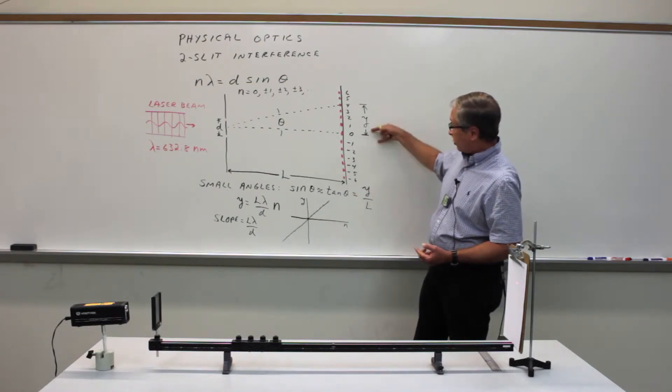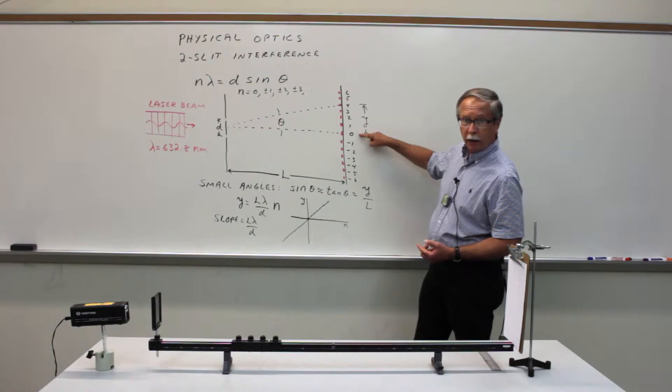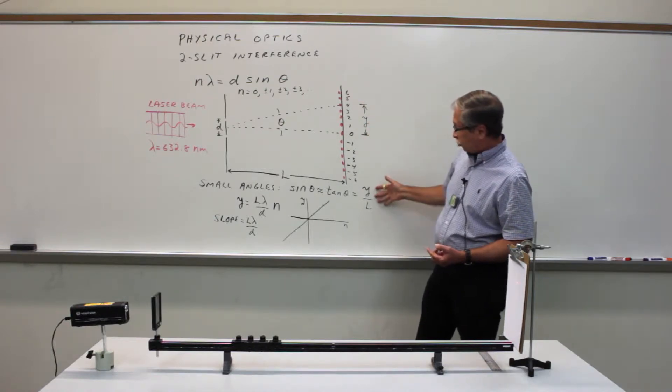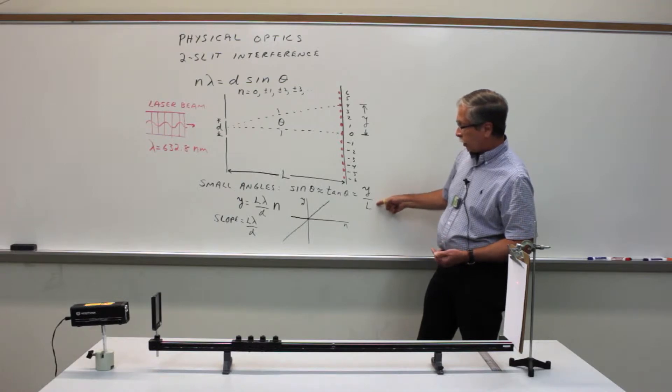and the distance Y from the center of the interference pattern to the location of any of these bright spots, and the tangent of theta is just Y divided by L.